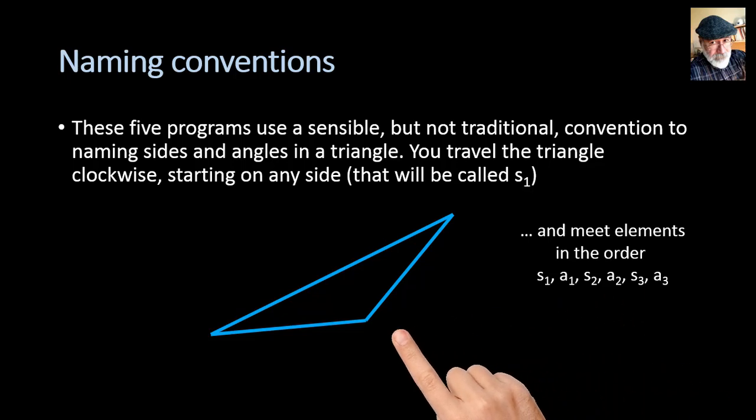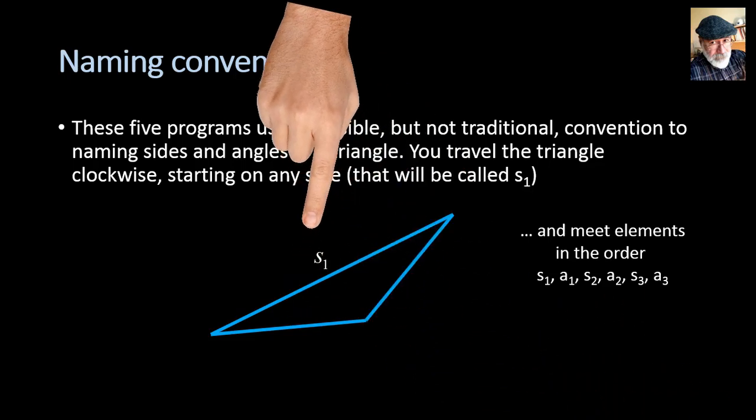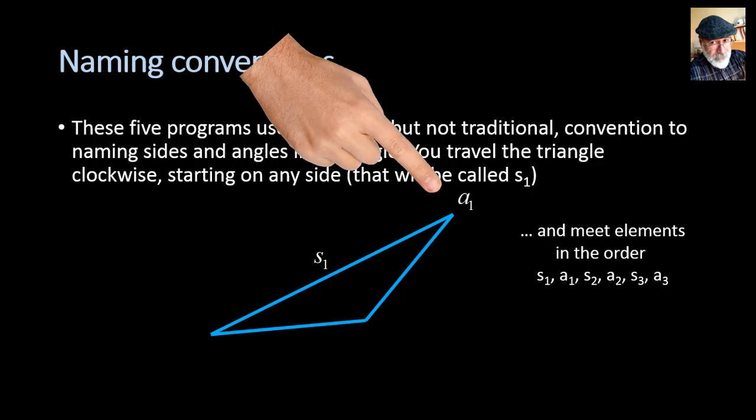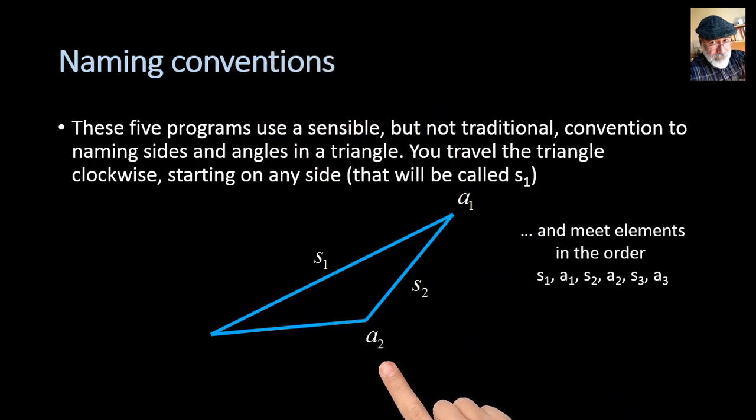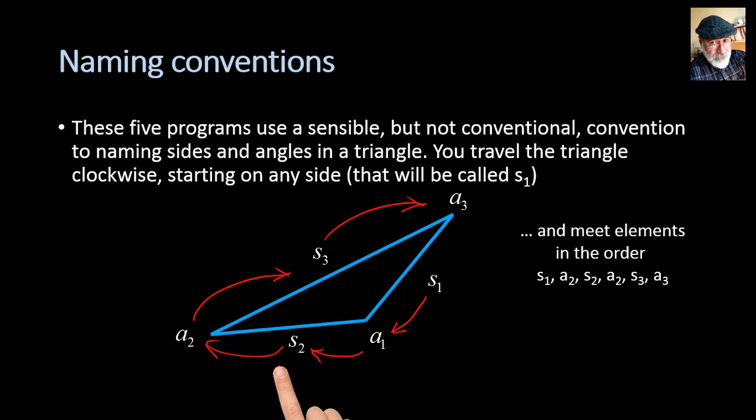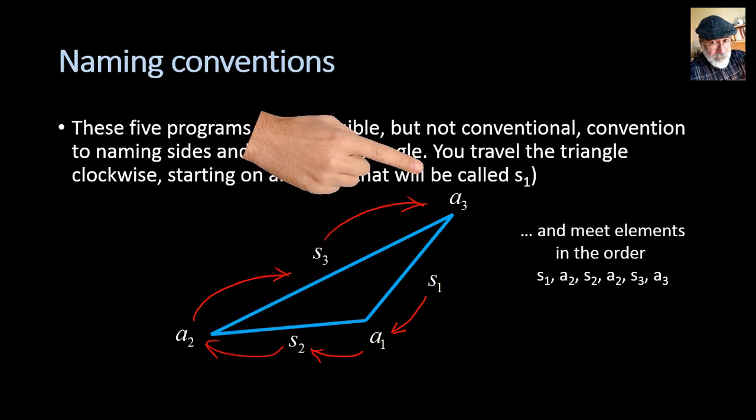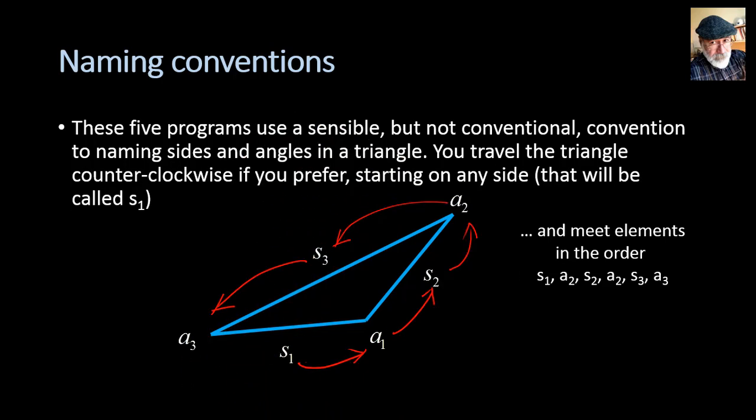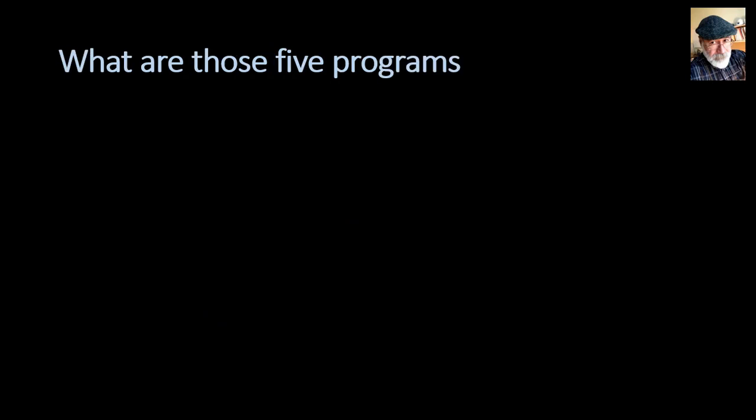Check it out. That is a triangle. I choose this side as being side 1, and I choose to travel that triangle clockwise. Then this will be angle 1, side 2, angle 2, side 3, angle 3. I could have chosen this other side to be side 1, and then this would be side 1, angle 1, side 2, angle 2, side 3, angle 3. I could have chosen to travel the triangle counterclockwise, and that's what you have. Side 1, angle 1, side 2, angle 2, side 3, angle 3. I think you've got the idea.